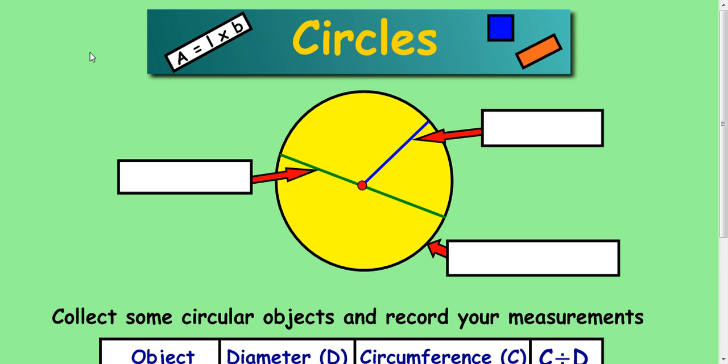In this lesson we're going to look at the circle and we're going to look at a special relationship that exists between the circumference of a circle and also the diameter of a circle.